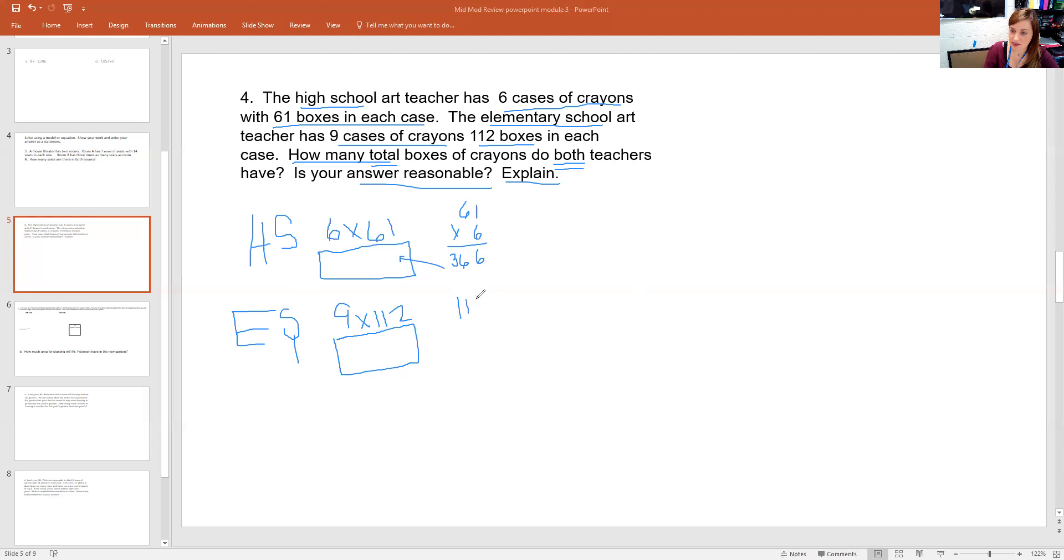Now let's check elementary school. I have 112 times nine. Nine times two is 18. Nine times one is nine, plus one more makes 10. Nine times one is nine again, plus one more, 10.